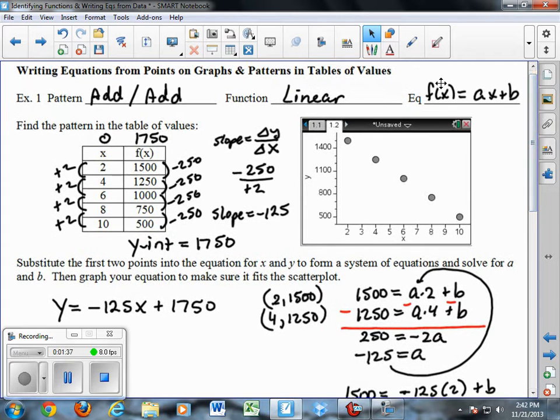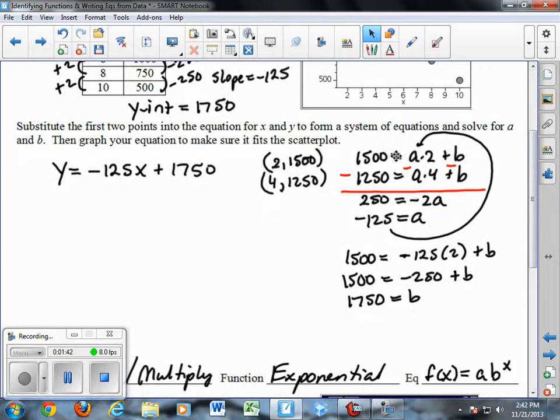So I'm going to substitute the y value for the y and the x value for the x here, and I get 1500 equals a times 2 plus b, and 1250 is a times 4 plus b using these two points.